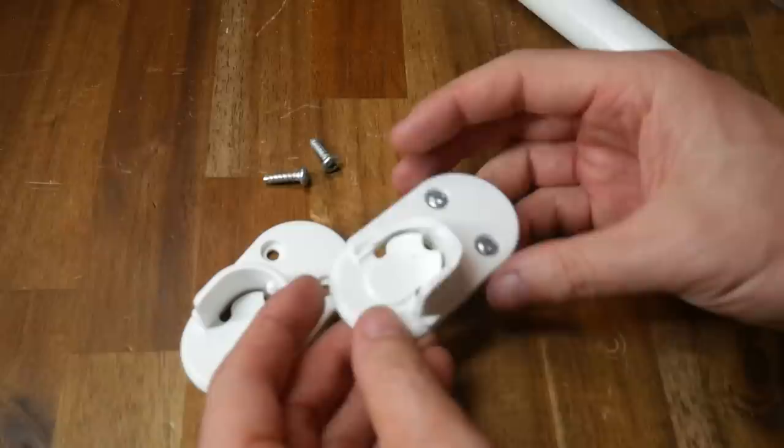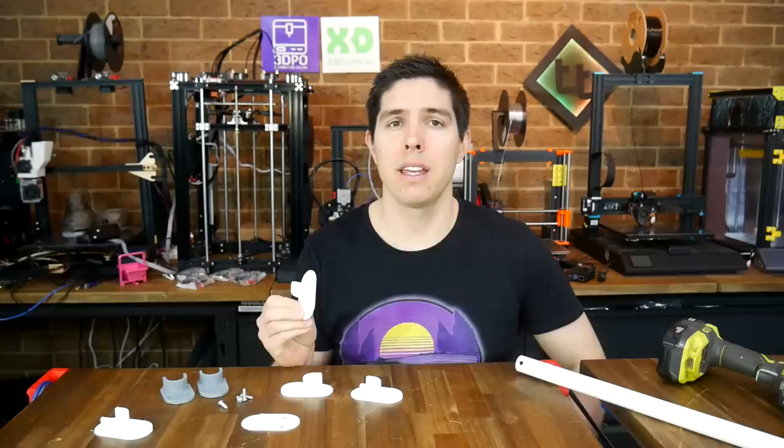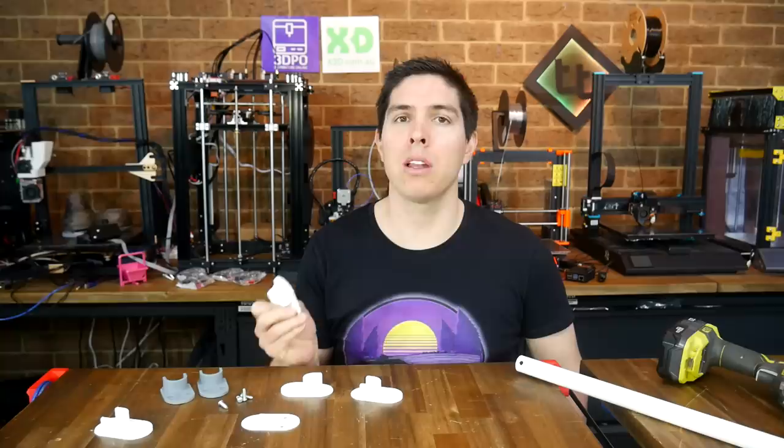This busted clip from inside an IKEA wardrobe is an example of that. I could head into store or browse the website to try and find the replacement part, or since I have a 3D printer, I can model up my own and have it fixed really quickly.